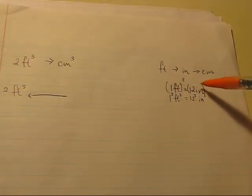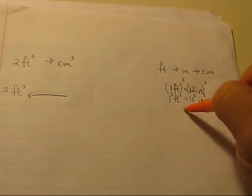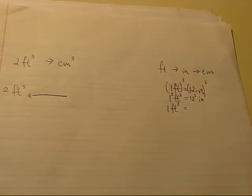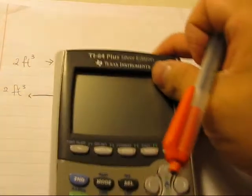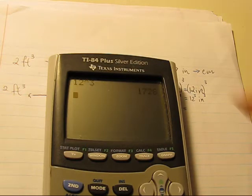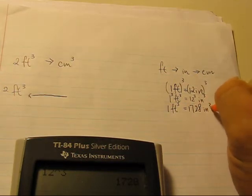So when I simplify this, it becomes one cubic foot, and twelve to the third power is seventeen twenty-eight. So, seventeen twenty-eight cubic inches.